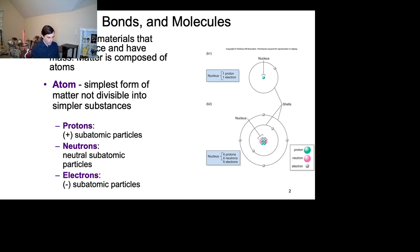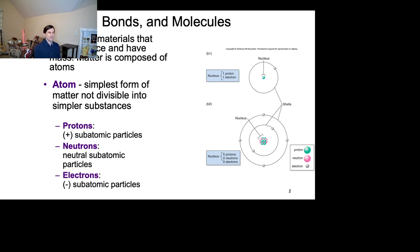An atom is made up of three smaller things: protons, neutrons, and electrons. Those three things are called subatomic particles — sub meaning smaller than the atom itself. Protons have a positive charge. Neutrons have a neutral charge, so no charge at all. And electrons have a negative charge — it's just kind of how they're put together, the electrical current that runs around them.